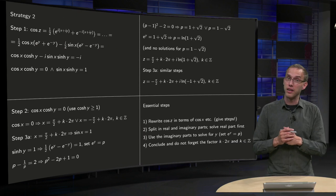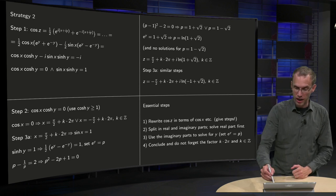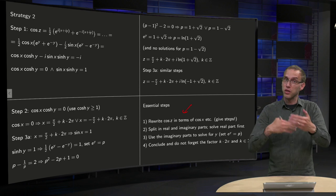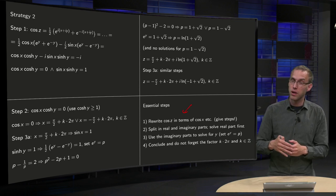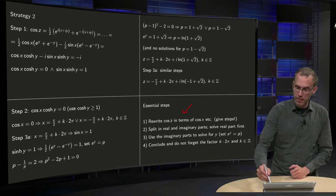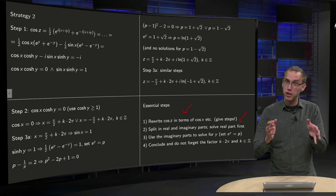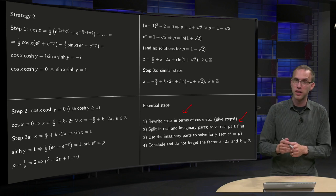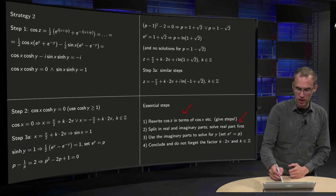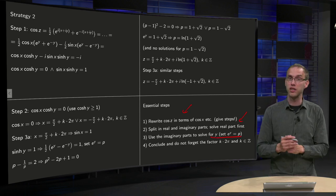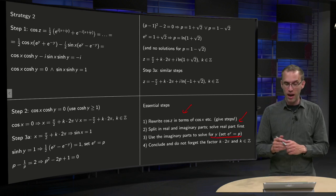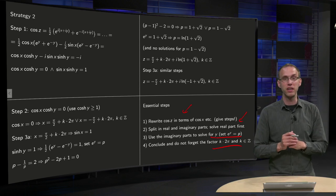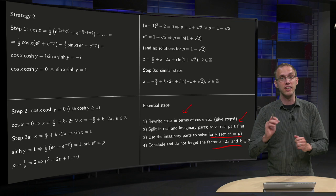The essential steps for strategy 2: first, rewrite cosine z in terms of cos(x) and hyperbolic functions — this requires several steps, don't skip any. Then split into real and imaginary parts; it is easiest to solve the real part first. For the imaginary parts, solve for y by setting e^y equals p. Finally, do not forget the additional factor k times 2π, where k is in ℤ.